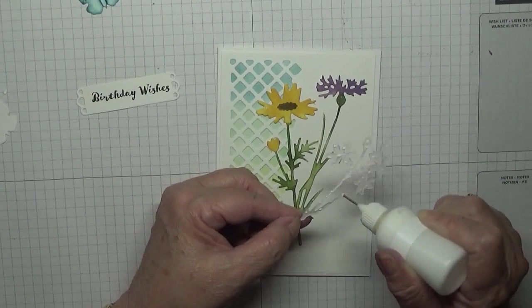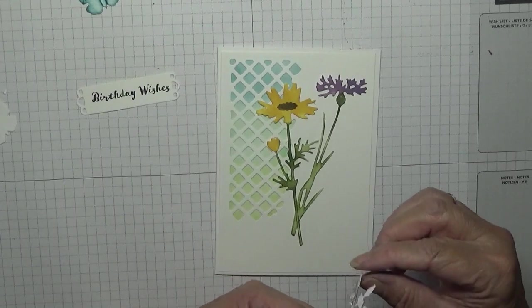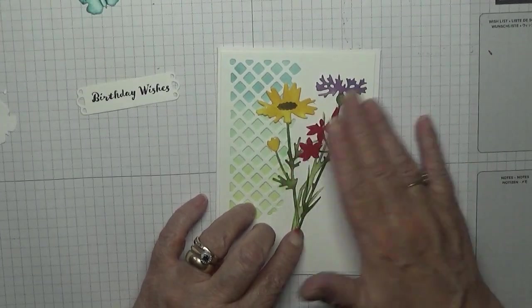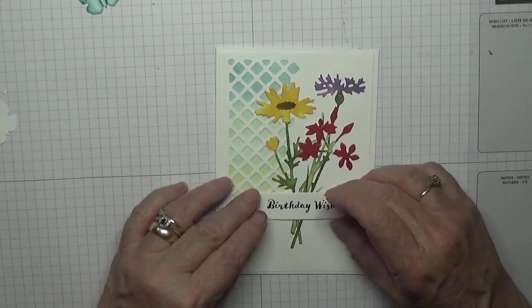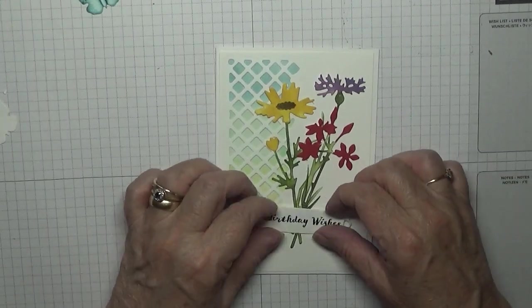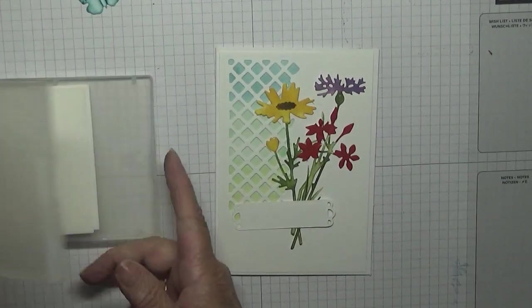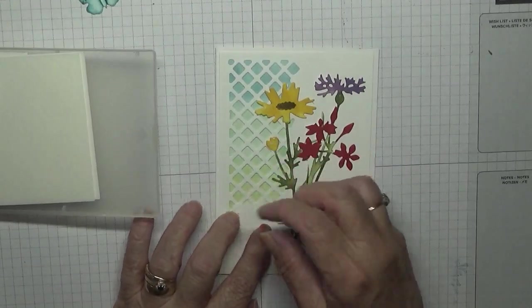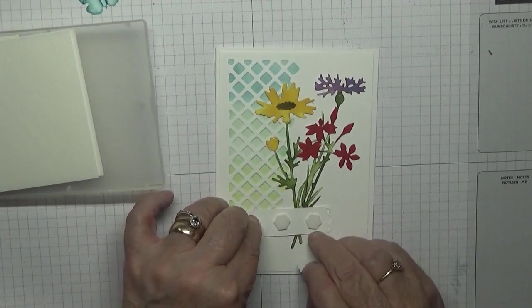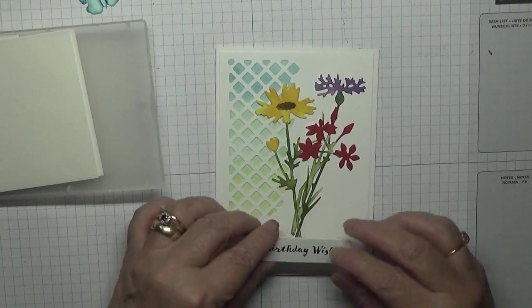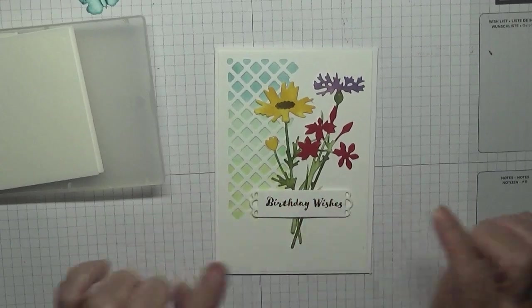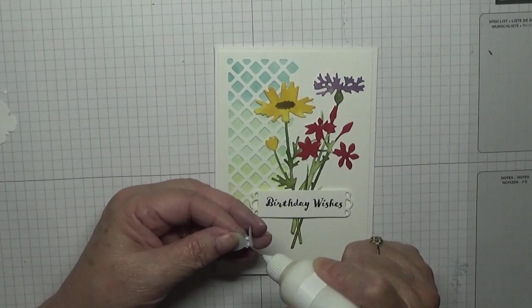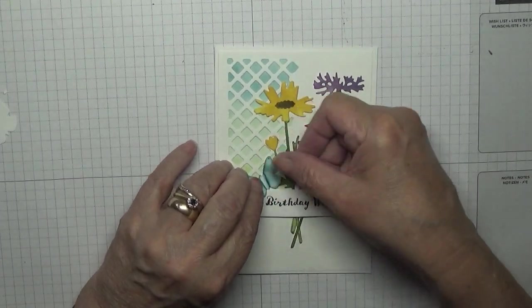Just making sure I get ink on, glue on all the points of it because we don't want it to lift off. And this one. And now this wishes or Birthday Wishes will go across there on dimensionals. And you need three. One, two, three. And a butterfly will go on top. Doesn't actually, it goes underneath. It looks like it's sitting on top.